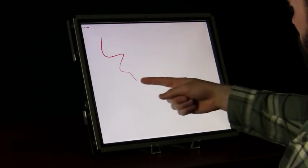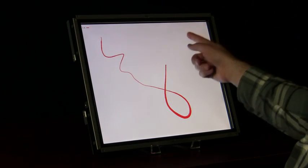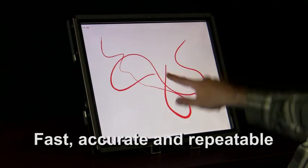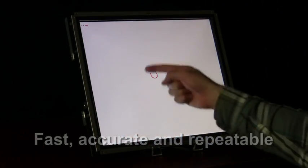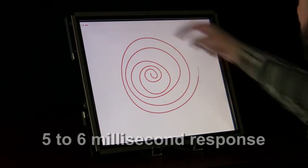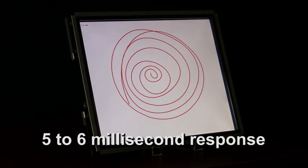The touch experience is critical to a user's perception. It needs to be fast, accurate and repeatable. Fast is a 5 to 6 millisecond response to a touch. Slightly slower and a user gets impatient. Significantly slower and the application is viewed as flawed.